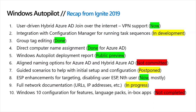So where have we managed to actually make progress? Looking at that list, we are very close to having user-driven hybrid Azure AD join over the internet with VPN support be in public preview. It is in private preview now with about 150 customers trying it out with various different VPN clients, so it's looking good. Any day now that should be available.